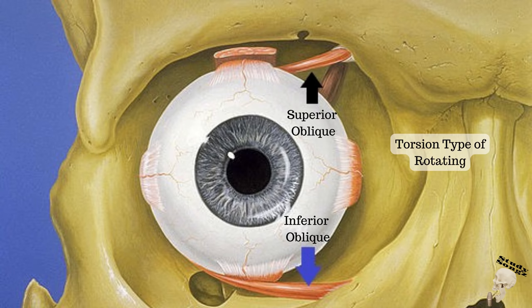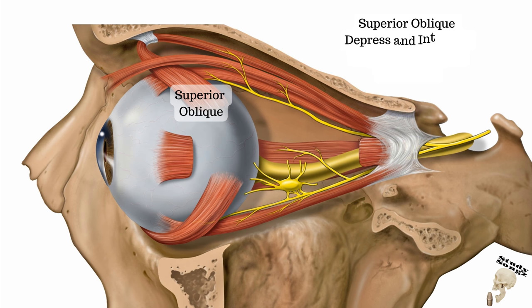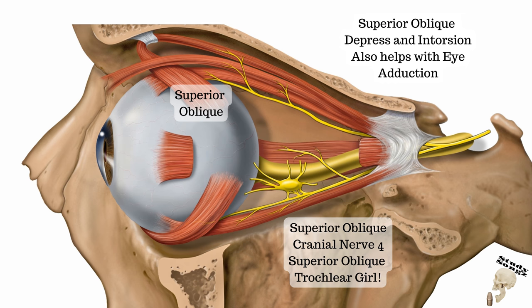Intorsion and extorsion — horizontal rotation. Superior and inferior oblique, wrapping around, looks so sleek. Superior oblique: sphenoid to sclera, through the trochlear pulley to sclera. Trochlear pulley, trochlear nerve — superior oblique, trochlear nerve.